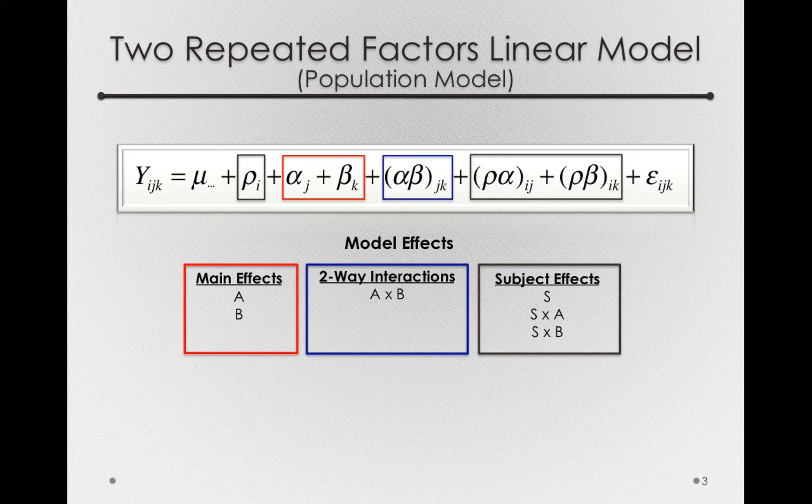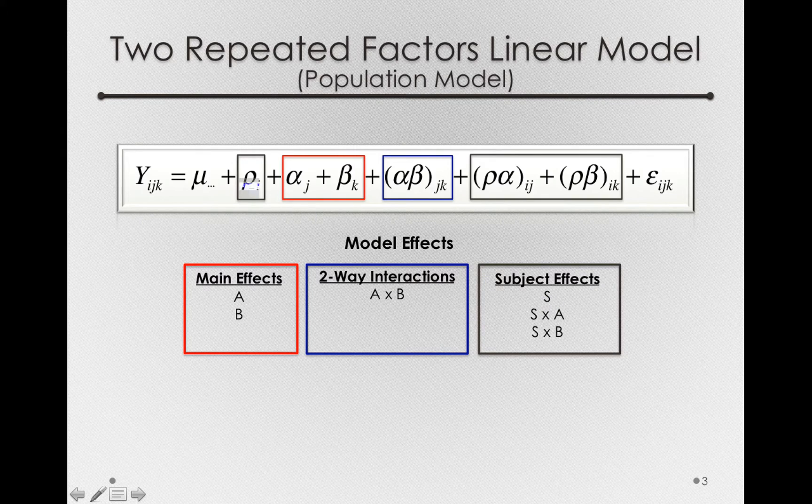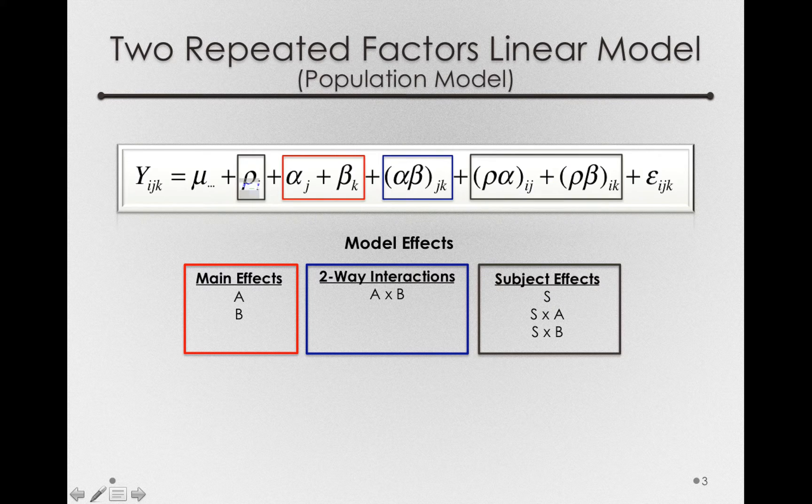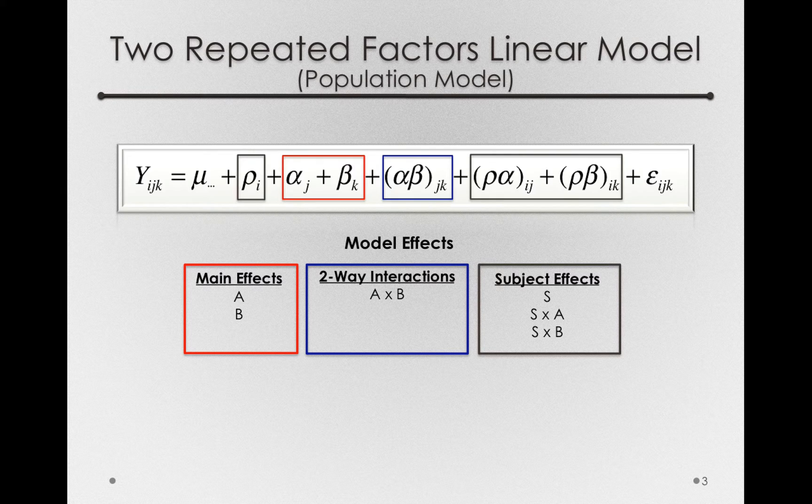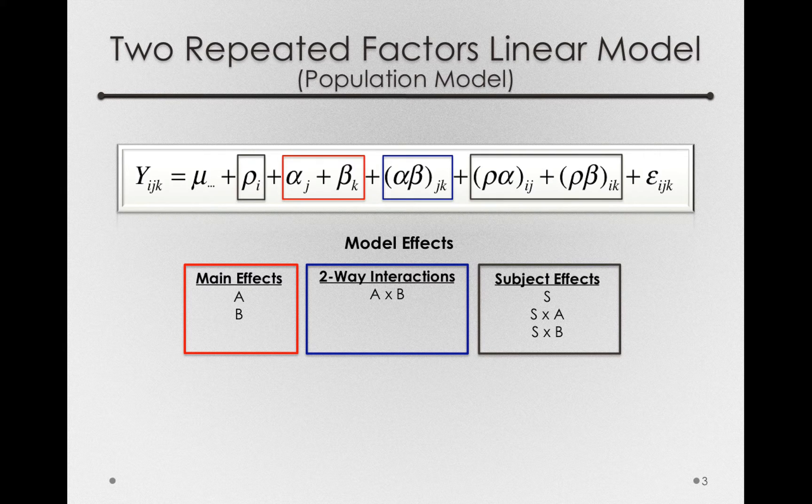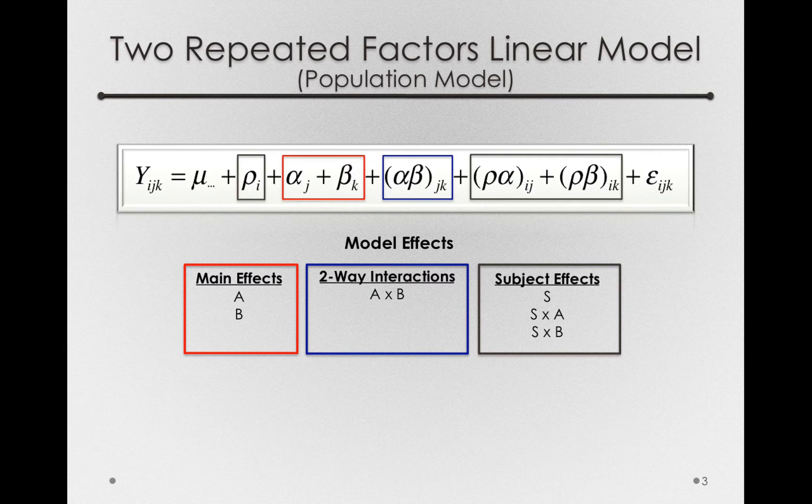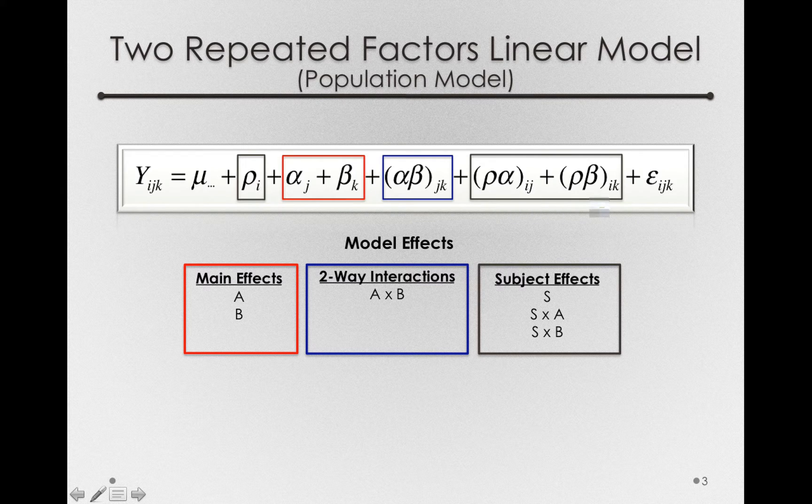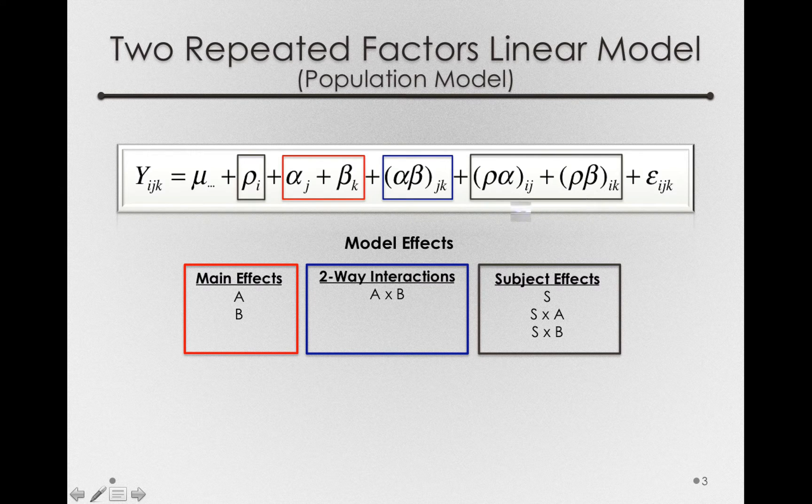So the overall offset for subject, that is the S effect here or the row effect in the Greek letter, that refers to the overall offset for a subject, the degree to which a subject is different on average to the grand mean. Now, the other interaction terms, the ones that are subject interactions, are kind of special.